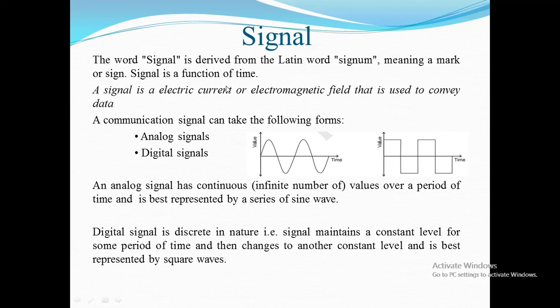Communication signals are of two types: one is analog signals and the other is digital signals. An analog signal has continuous values over a period of time, and it is best represented by a series of sine waves. A digital signal is discrete in nature, meaning it can have only a limited number of defined values - it can be zero or it can be one. This type of signal is actually a digital signal.